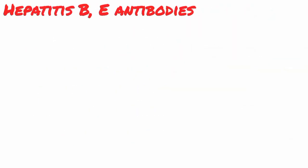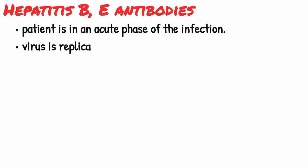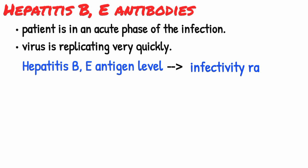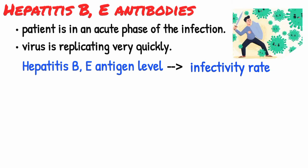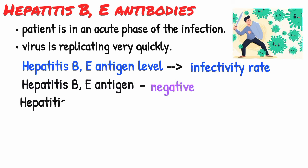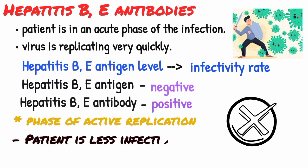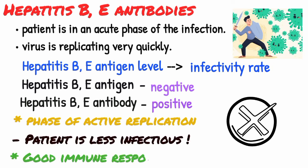Next let's talk about the hepatitis B E antibody. Remember that the HBeAg implies that the patient is in an acute phase of the infection and the virus is replicating very quickly, and the level of the HBeAg correlates with their infectivity. But over time the immune system will respond and start to produce E antibodies. When the HBeAg is negative but the HBeAb is positive, this implies that they've been through a phase where the virus was replicating actively, but the virus has now stopped replicating and the patient is less infectious, because there's been a good immune response.